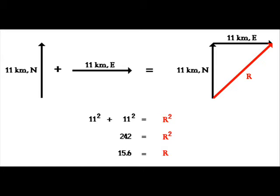Hello class, today we're going to add and resolve vectors. So we have a boat and it's traveling 11 kilometers per hour north, but at the same time it's also in a river current which is also traveling 11 kilometers per hour, but to the east. So 11 squared plus 11 squared equals c squared, where c squared is about 242. The square root of 242 is about 15.6. So your final answer should be 15.6 kilometers at 45 degrees north of east, or east of north, whichever you prefer.